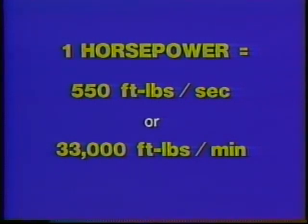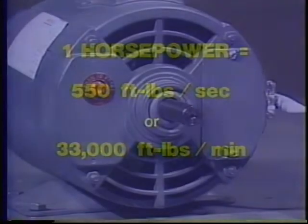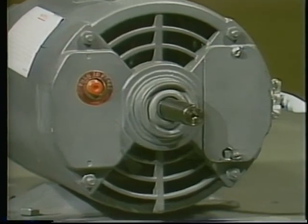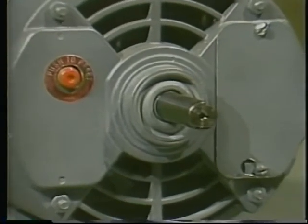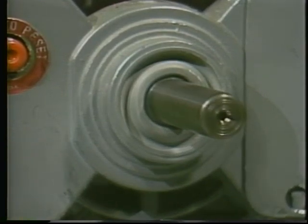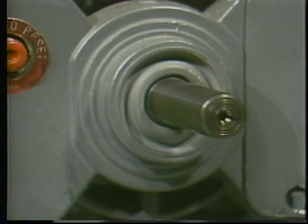To produce one horsepower, a motor must do 550 foot-pounds of work in one second, or 33,000 foot-pounds of work per minute. Power is related both to shaft speed and to torque. The more torque a motor exerts, the larger the load it will move; the faster the shaft turns, the faster a particular load will move.